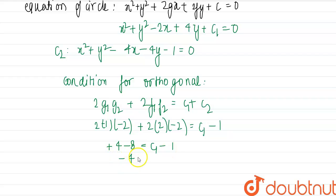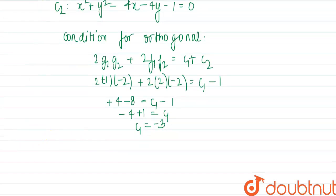So this is minus 4 plus 1 equal to c1 so c1 equal to minus 3. So now we have the equation of the circle that is x square plus y square minus 2x plus of 4y and c1 is minus of 3 equal to 0.